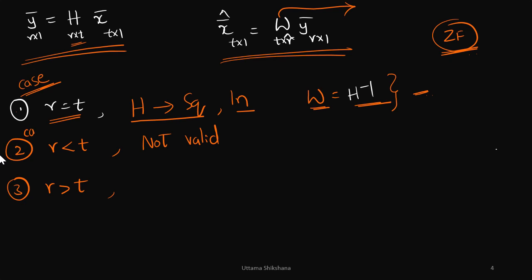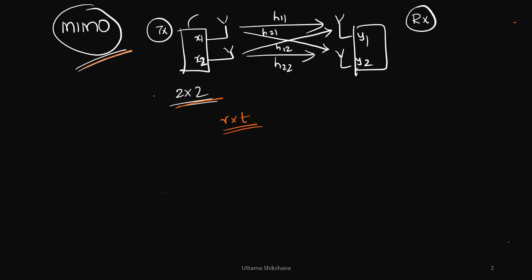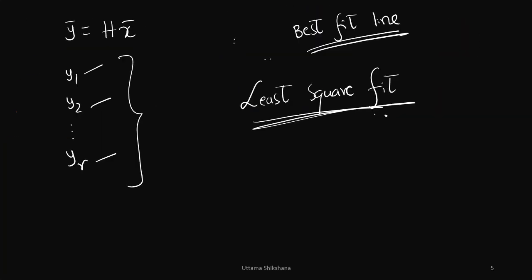Case number two: this is not valid. If I go back to my diagram, T is equal to 2 and R is also equal to 2. If I make R equal to 1, which gives R less than T, then I will have only one equation for two unknowns, X1 and X2. This is not solvable — the solution does not exist, so this case is invalid.